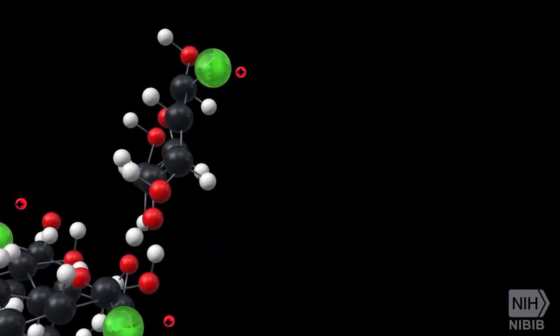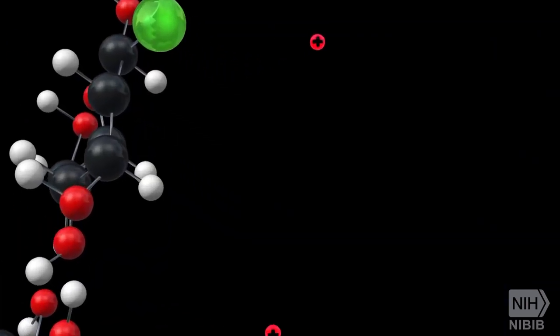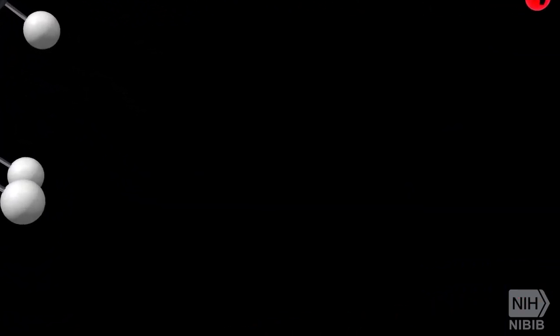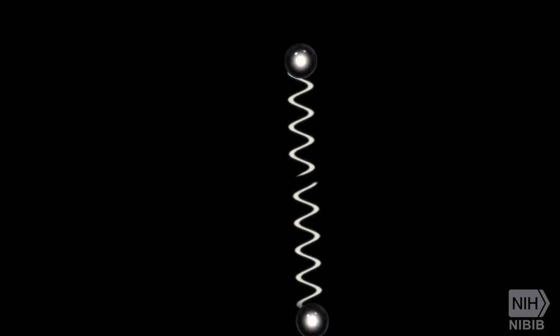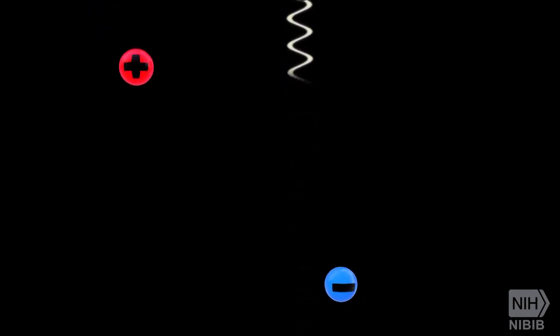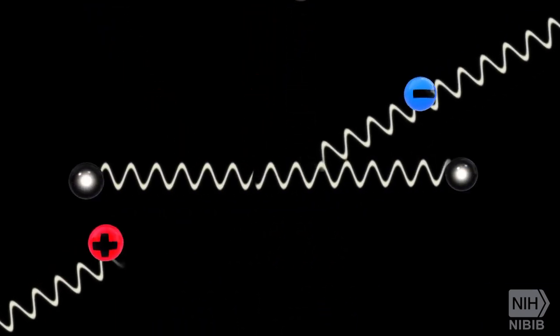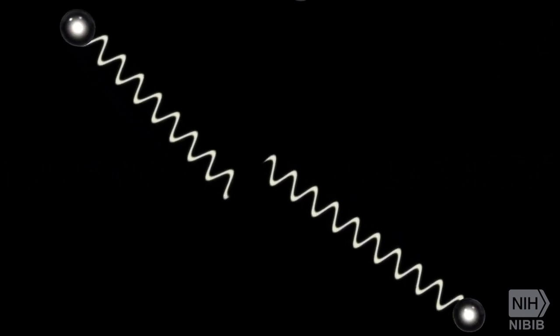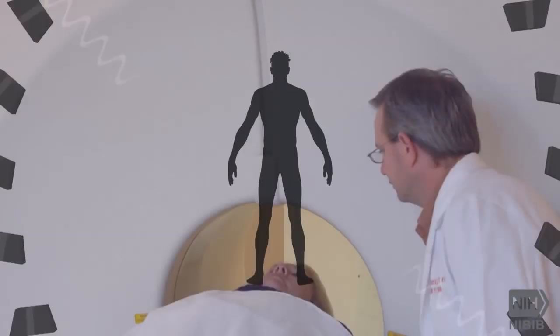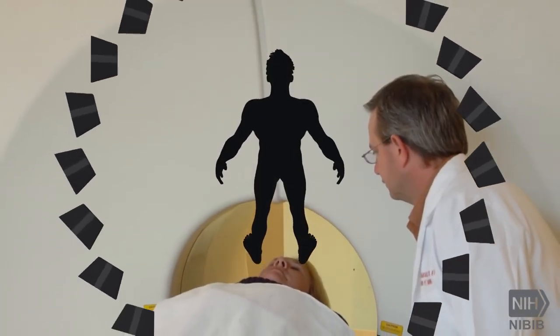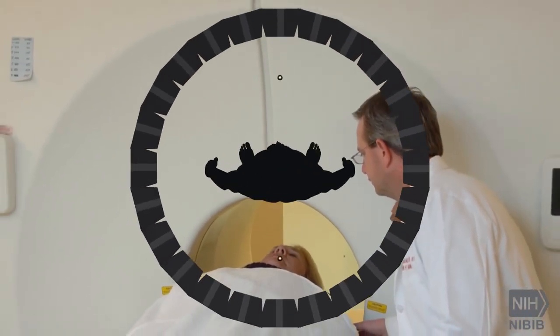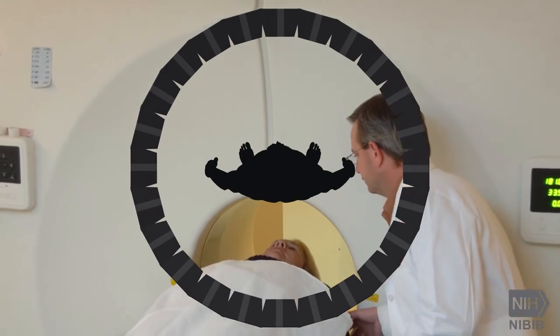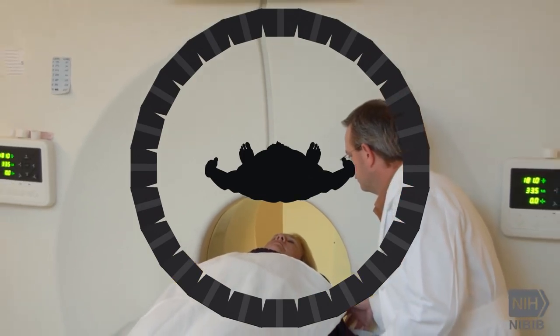The isotope produces small particles called positrons, which interact with surrounding electrons. This interaction results in the complete annihilation of both particles, releasing two photons that speed off in opposite directions.